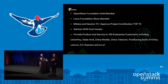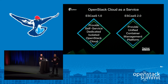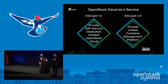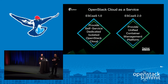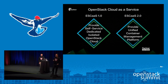This is a recap of ESCAST 1.0 and 2.0. In those versions, we provided a dedicated, isolated, and elastic OpenStack cloud with a self-service dashboard, and a unified container management platform providing a mesh of container orchestration engines on top of OpenStack.